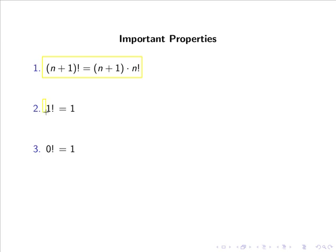Intuitively, 1 factorial is simply 1, but perhaps not so obvious is that 0 factorial also equals 1.